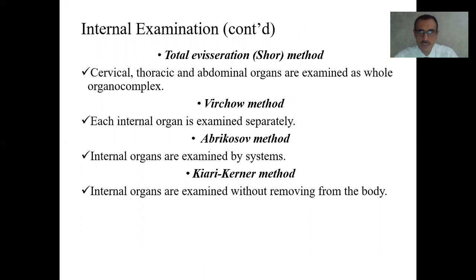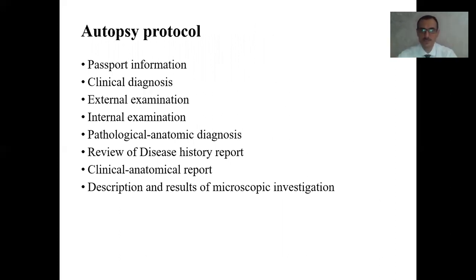Other autopsy methods include total evisceration or Schor's method, where cervical, thoracic, and abdominal organs are examined as a full organocomplex; Virchow's method, where each internal organ is examined separately; Abrikosov's method, where internal organs are examined by systems such as pulmonary, digestive, urinary, and reproductive systems; and the Kiernan method, where internal organs are examined without removing from the body. Finally, we prepare the autopsy protocol including passport information, clinical diagnosis, external examination, internal examination, pathological anatomical diagnosis, review of disease history, clinical-anatomical report, and description and results of microscopic investigation.